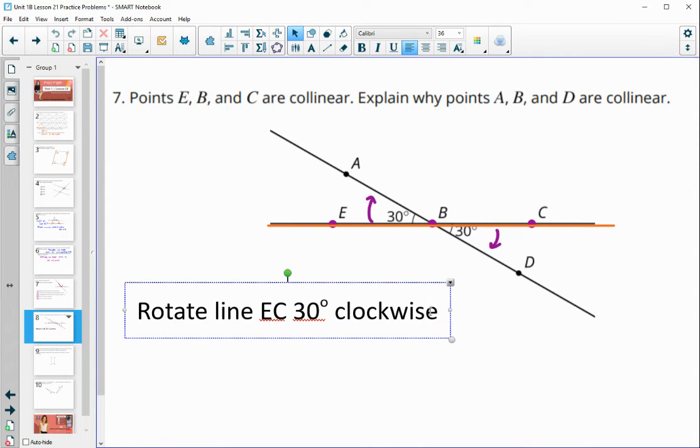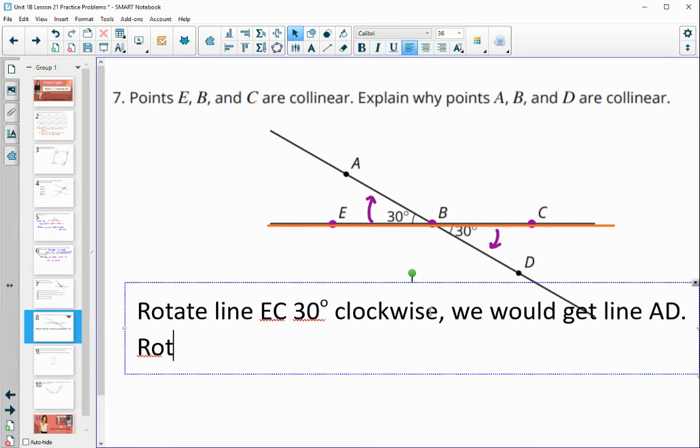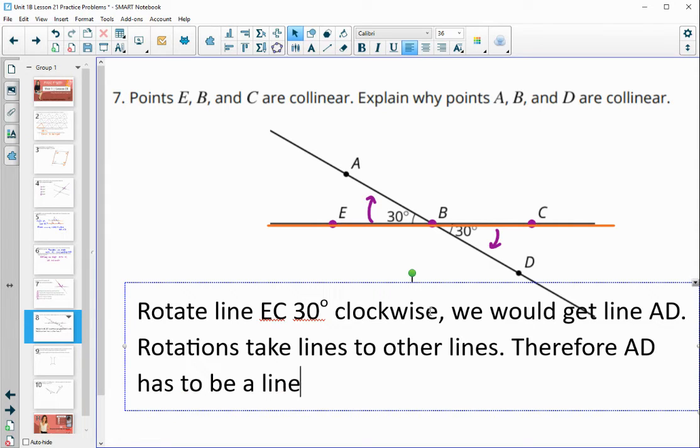So rotate line EC clockwise, 30 degrees clockwise, we would get line ED. And rotations, rotations take lines to other lines. So AD would have to be a line. And A, B, D would have to be collinear.